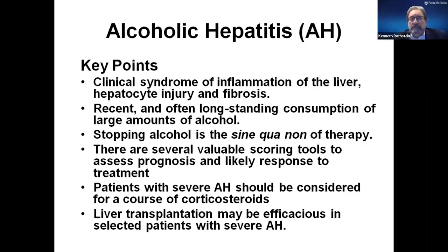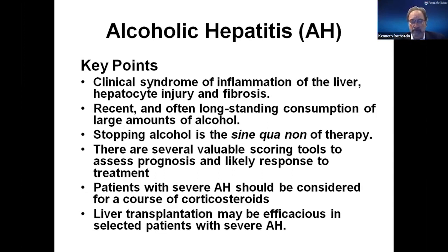There are some key points I want you to take away tonight. This is a clinical syndrome of inflammation of the liver with injury to the hepatocytes and fibrosis. You do need longstanding consumption of large amounts of alcohol, but often in recent times you're drinking more than before. The main therapy — the best therapy — is to never drink alcohol again. In my experience, only about 50% of my patients can stop drinking. There are many scoring tools to assess prognosis and response to treatment. Patients with severe alcoholic hepatitis should be considered for steroids, and we now accept that transplant may be an acceptable therapy for select patients who come in with severe acute alcoholic hepatitis.